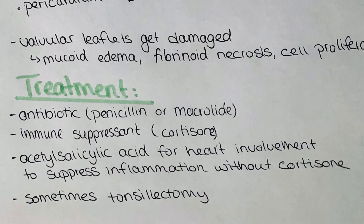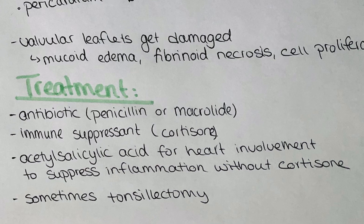The treatment for rheumatic fever depends on its severity but usually involves antibiotics. The antibiotic of choice is penicillin, but in case of penicillin allergy, macrolides can also be used. Immunosuppressants like cortisone can be given; however, acetylsalicylic acid can also be given for heart involvement to suppress inflammation without cortisone. Sometimes a tonsillectomy may be necessary if the infection can be localized to the tonsils, since it usually starts as a strep throat.